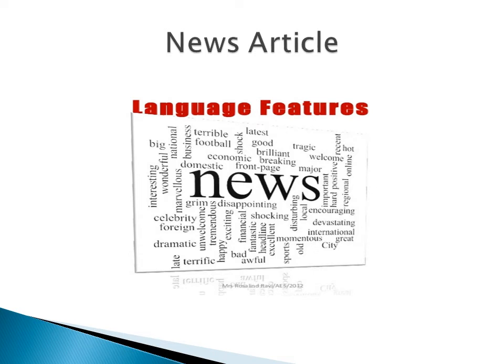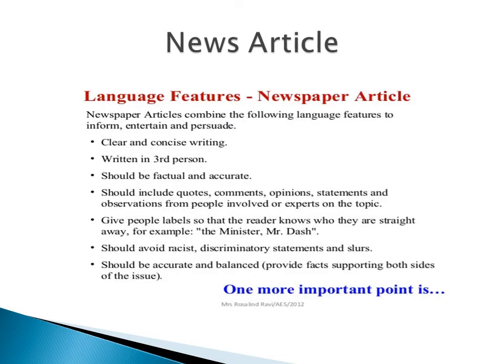News articles include language features. Newspaper articles combine the following language features to inform, entertain, and persuade: clear and concise writing; written in third person; factual and accurate; includes quotes, comments, opinions, statements, and observations from people involved or experts on the topic. It gives people labels so that the reader knows who they are straight away — for example, the minister or Mr. Dash. And should avoid racist, discriminatory statements and slurs.